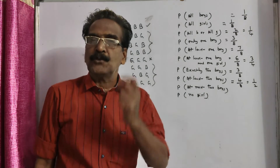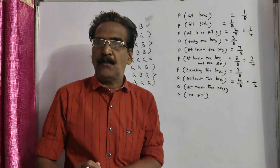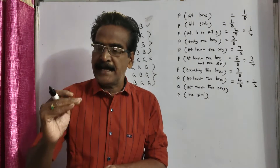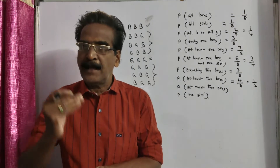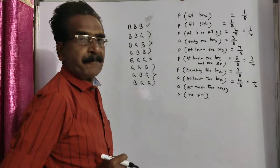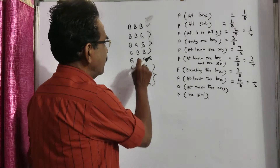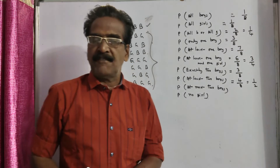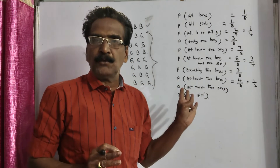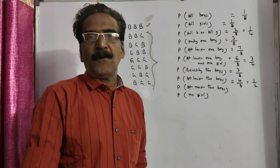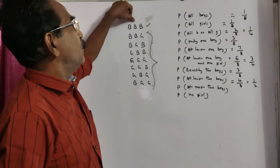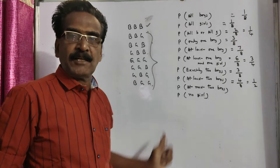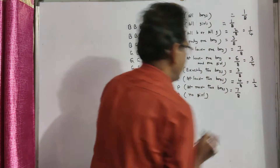At most two boys means two boys or less than two boys — that is two boys, one boy, or no boy. We don't take the three-boys outcome. In three cases you have two boys, in three cases you have one boy, and in one case no boy — all together seven outcomes are favorable. So seven by eight is the required probability.